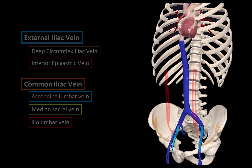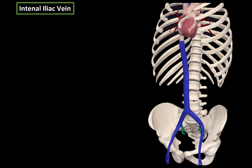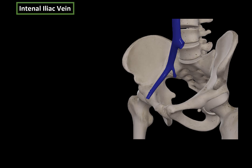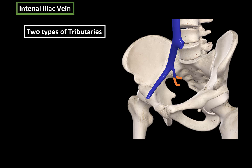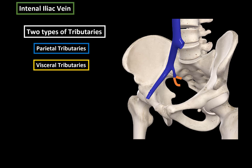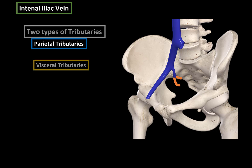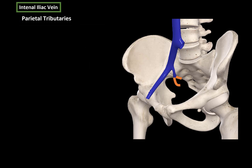The internal iliac vein is relatively straightforward as well. As the internal iliac vein descends, it splits into two divisions, and the tributaries of these two divisions are divided into two types: parietal tributaries, draining bones and muscles, and visceral tributaries, draining organs and soft tissue. Let's do the parietal tributaries first, and then the visceral ones.